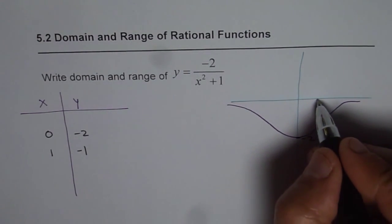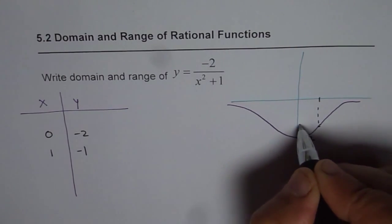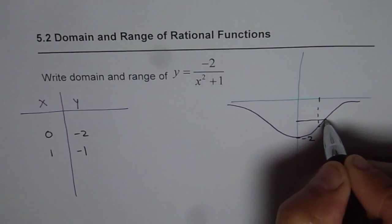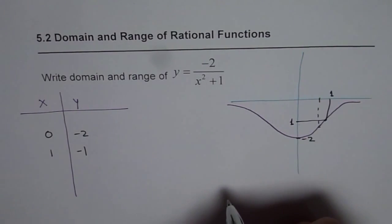So at x equals to 1, let's say 1, I have a value which let me say this point is good. So let me take this as 1. At x equals to 1 y value is minus 1.